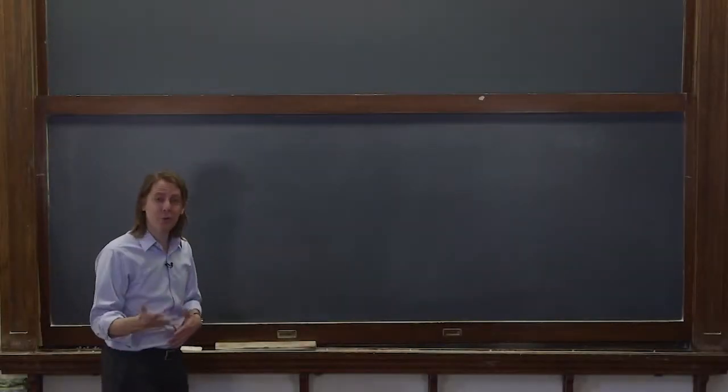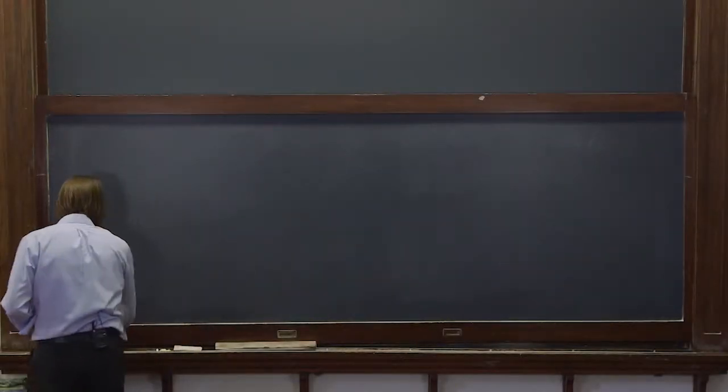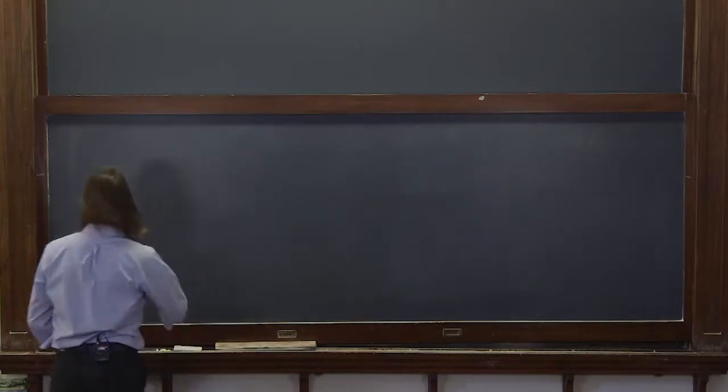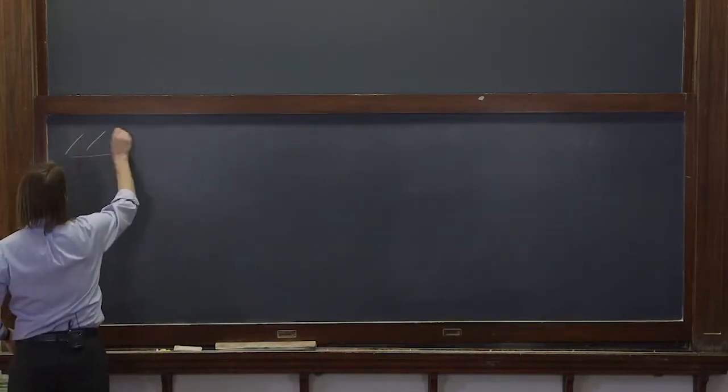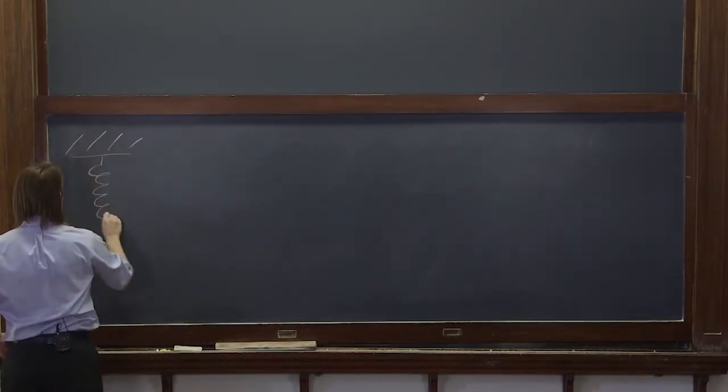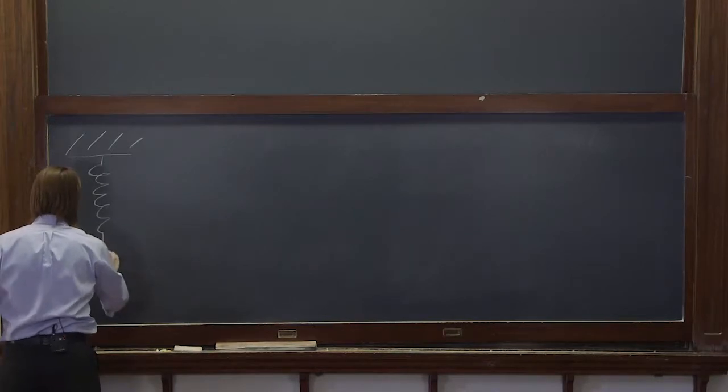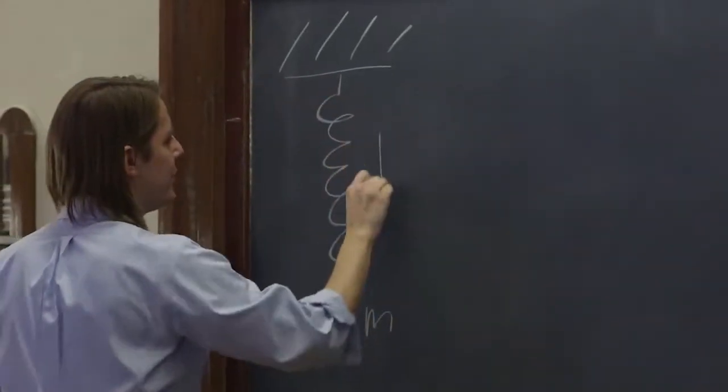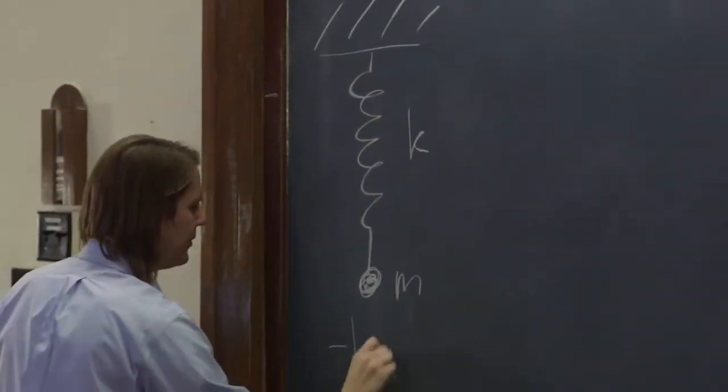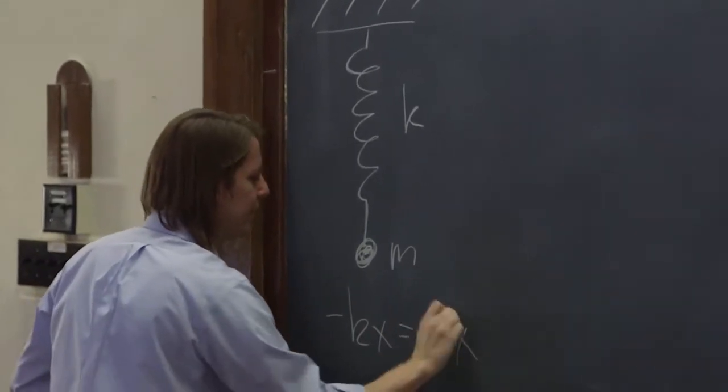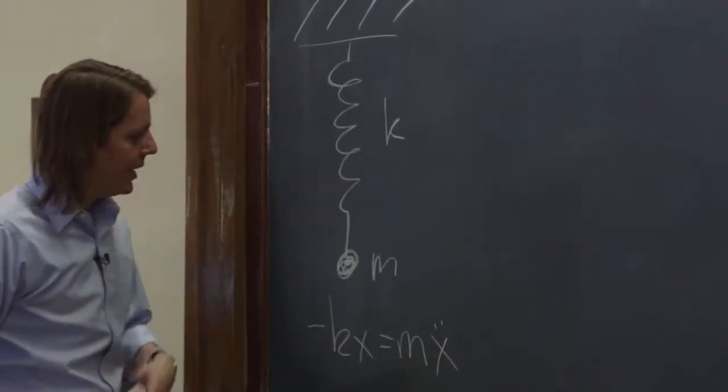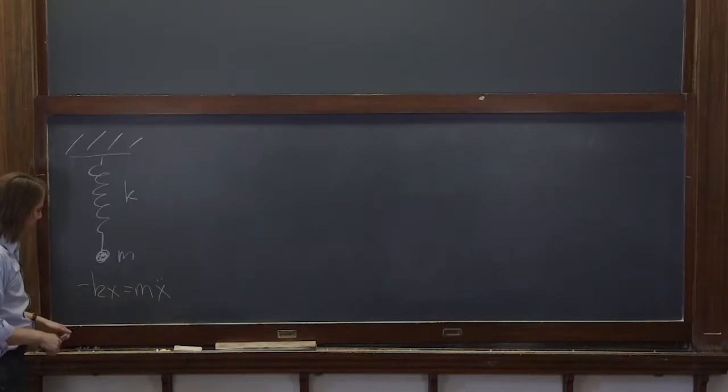We now have a new way to describe oscillatory motion. Let's use it. So let's go back to our mass on a spring, our favorite original mass, k minus kx equals mx double dot. And we're going to see if this exponential solves it.